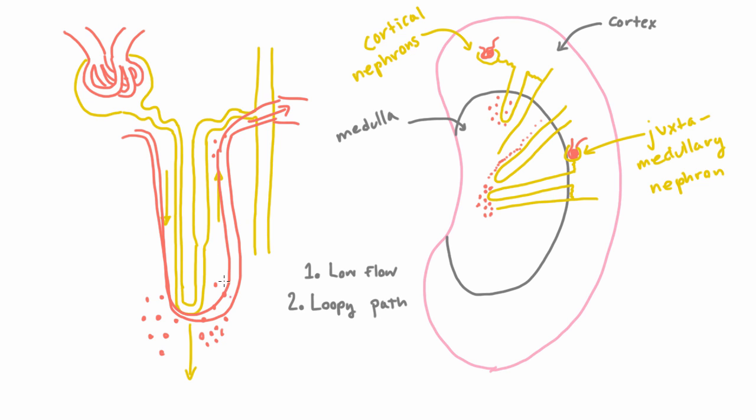Now these capillaries that come down and feed the medulla have a very specific name. They're called the vasa recta. And we've kind of drawn them materializing out of nowhere here. So that's obviously not what happens. So where are they coming from?